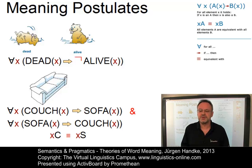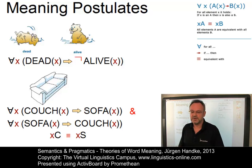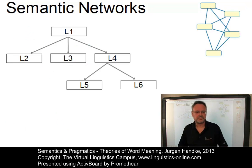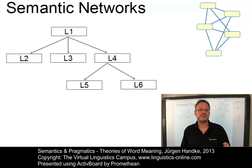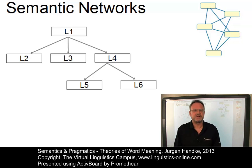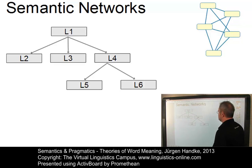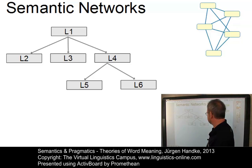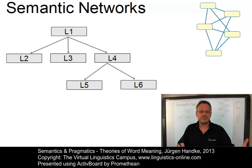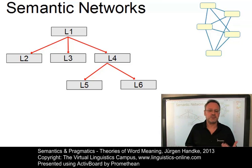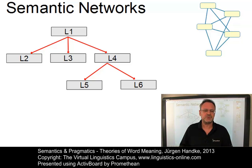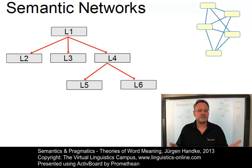Let us now continue with some popular cognitive approaches towards the formalization of word meaning. One of them is the so-called semantic network. Semantic networks have a relatively long tradition; they became known through work in biology and psychology and were originally thought of as primarily representing nominal concepts. In such simple semantic networks, concepts are represented by nodes — here by means of boxes, where the letter L stands for lexeme — and the interrelationships between nodes or concepts by means of so-called arcs, these arrows. The nodes stand for concepts, that is entities, events, and states of the domain, and arcs represent the interrelations between concept nodes.